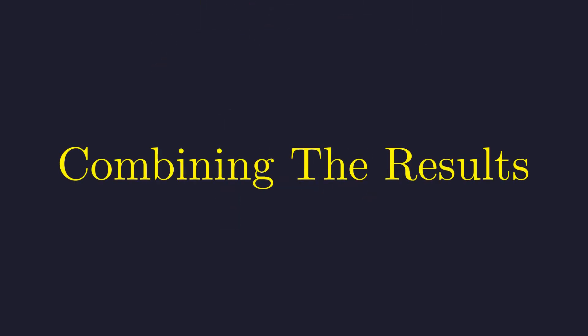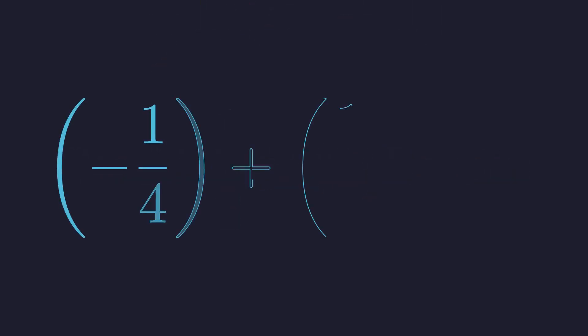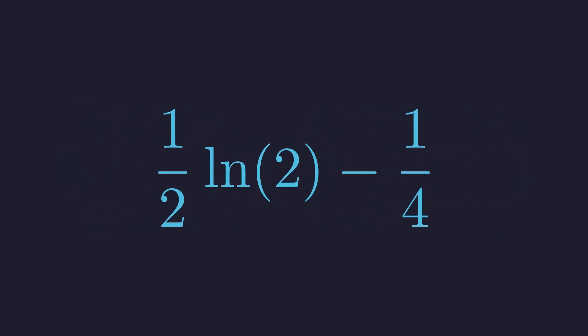Time to bring it all together. Adding the polynomial result, negative 1 fourth, to the remainder result, 1 half natural log of 2. Our answer is 1 half natural log of 2 minus 1 fourth.